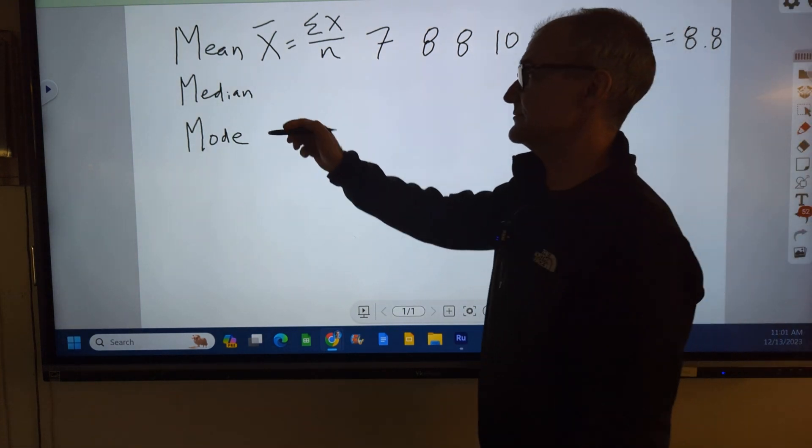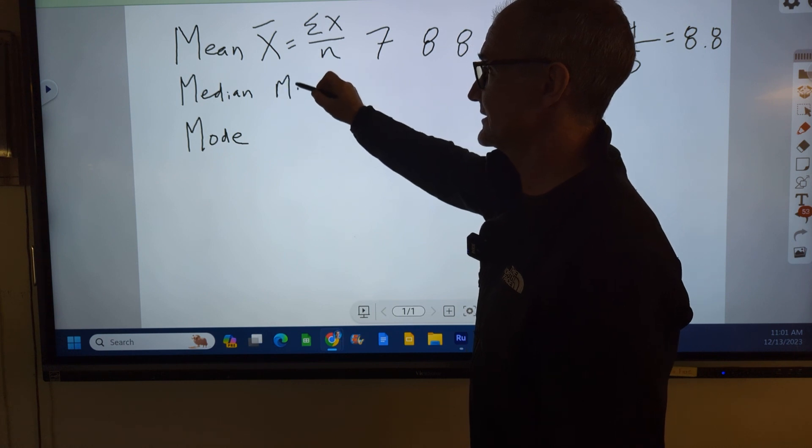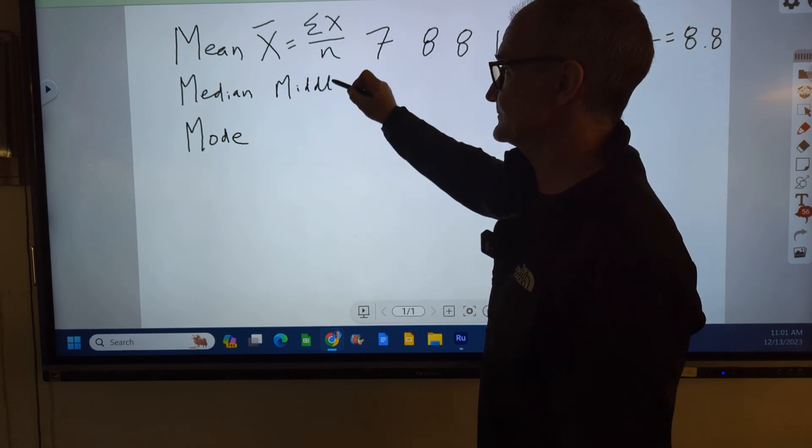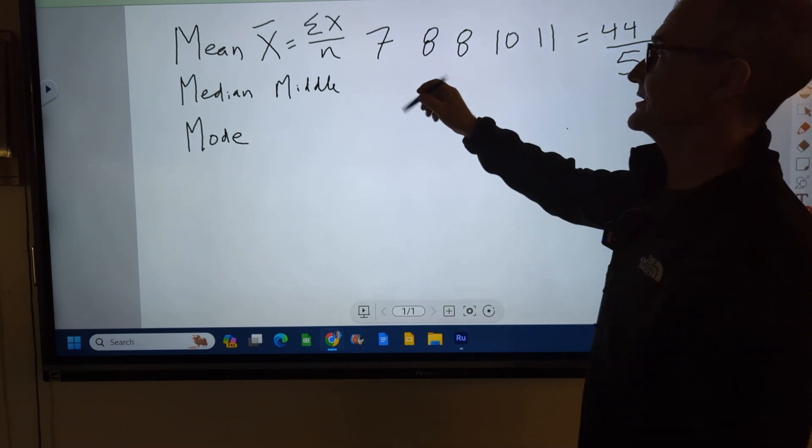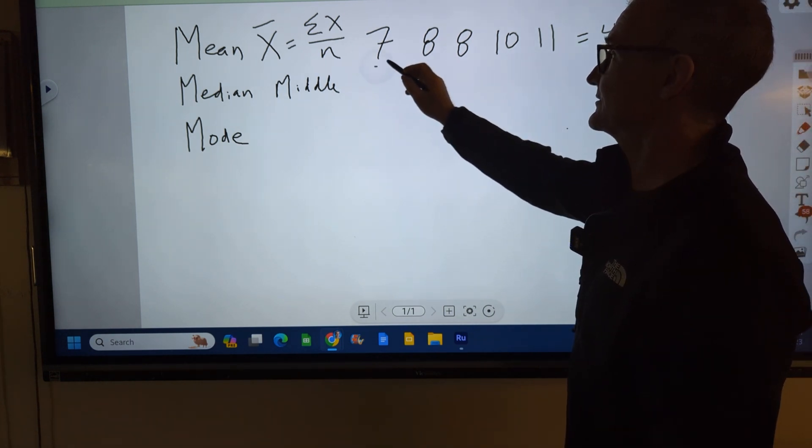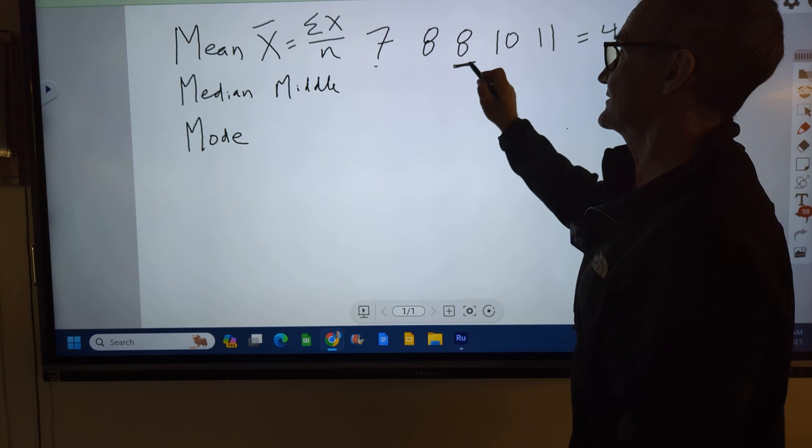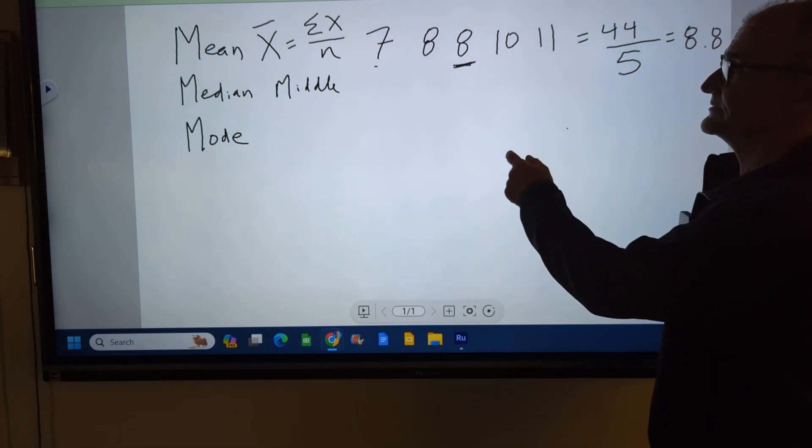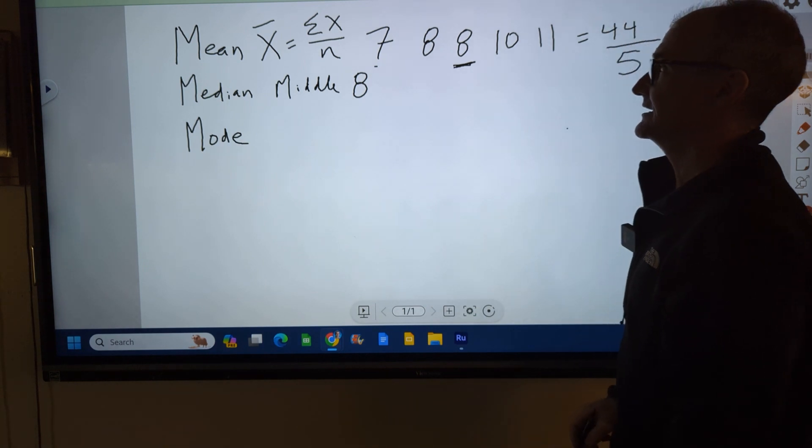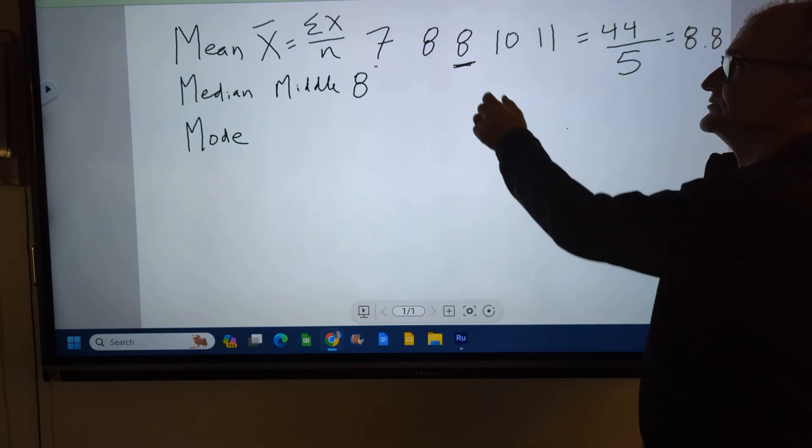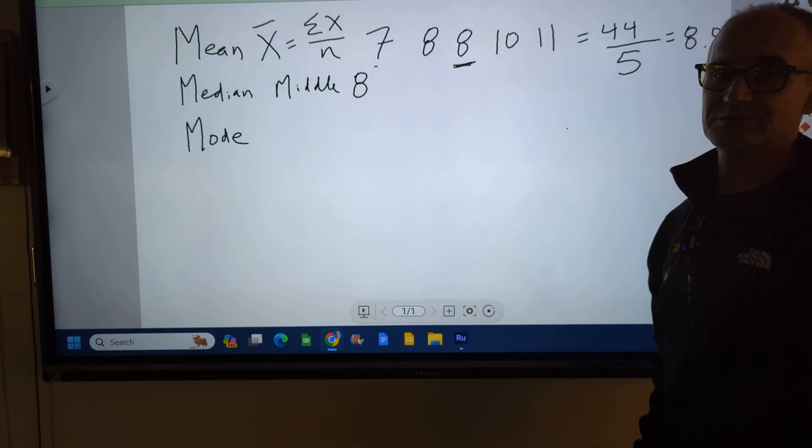Next we have median. The median is the middle number. I put them in order. So I go in increasing order. The middle number, if I have an odd number of values, will be this one here. So the middle number in this case is 8, and that's my median. If I had an even number of values, I would average the two middle ones.